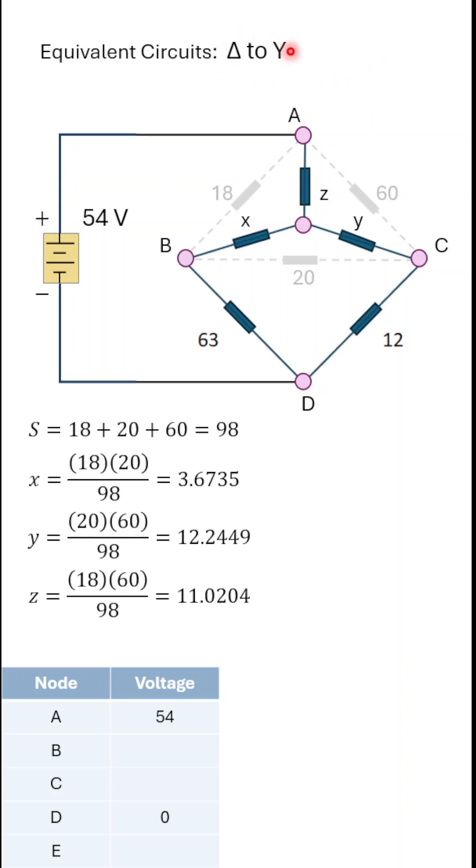And for our delta-to-Y equivalent circuit, we'll transform the 18, 20, and 60 ohm resistors that make up that triangle into X, Y, and Z, which introduces another node called E. Now, the way this equivalent circuit works is to find the sum of the three resistors, and that's 98, and that's the denominator of three calculations for resistors X, Y, and Z.